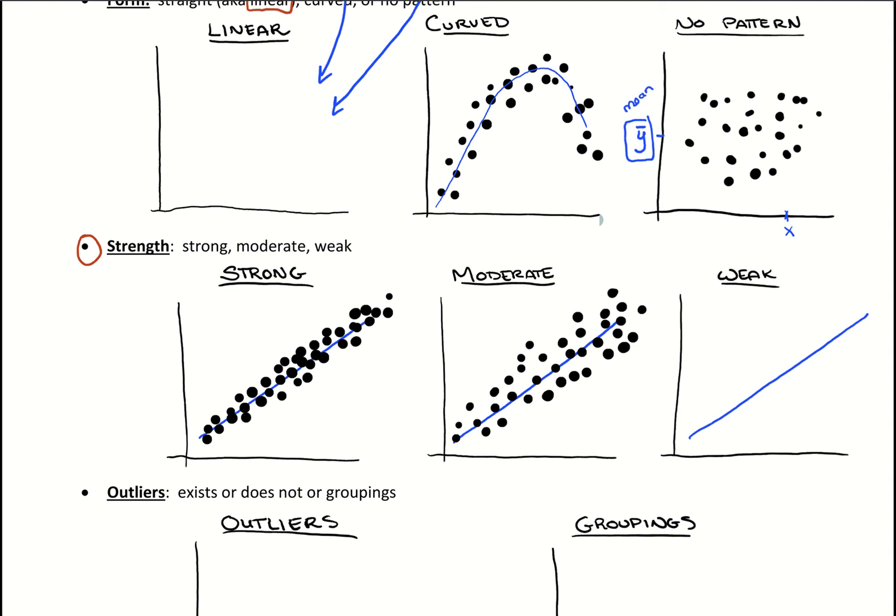And then when we get to weak, it might even not look very linear. It's going to have a lot of scatter to it. But maybe we could see something that's roughly linear that follows that upward trend.